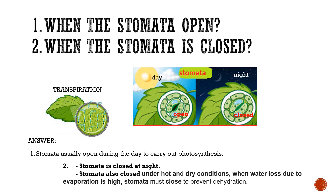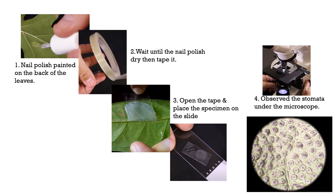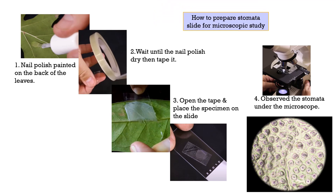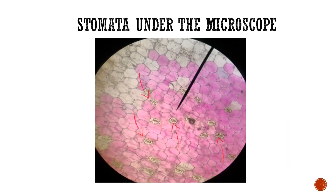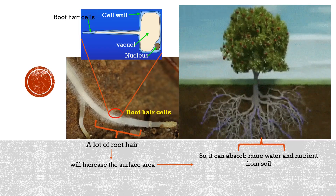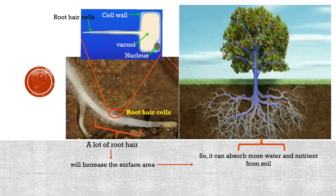Here's how to prepare a stomata slide for microscopic study: first, paint nail polish on the back of the leaf, wait until it dries, then tape it and peel the tape off. Place the specimen on the slide, then observe it under a microscope. See how beautiful it is!